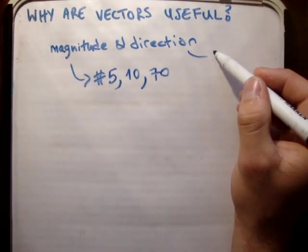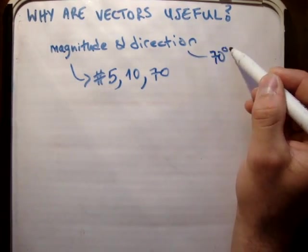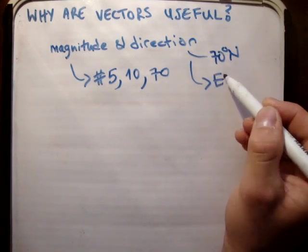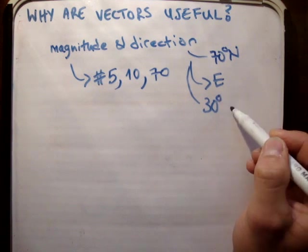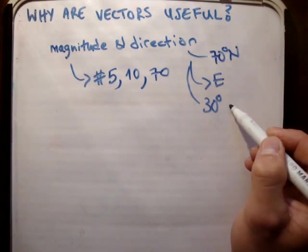And direction would be something like 70 degrees north, east, or 30 degrees against the x-axis.